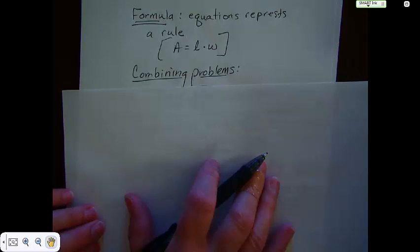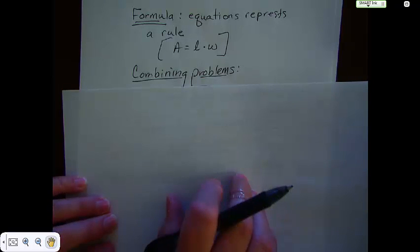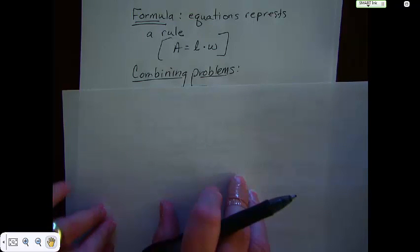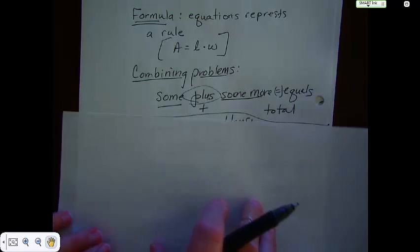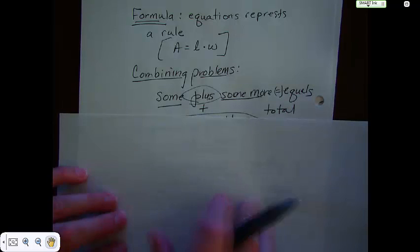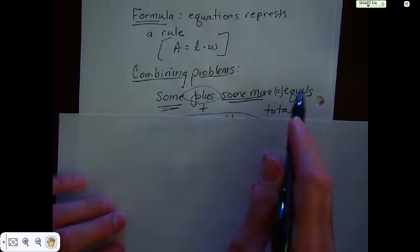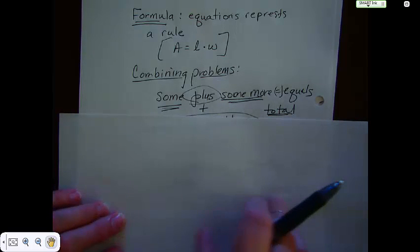Combining problems have an addition theme. Combining means I had three eggs and you had four eggs, so together we have seven eggs. I have three dozen oranges, you have two dozen oranges, so together we have five dozen oranges. The way you look at a combining problem is some plus some more equals the total. That's combining, you're adding it together.